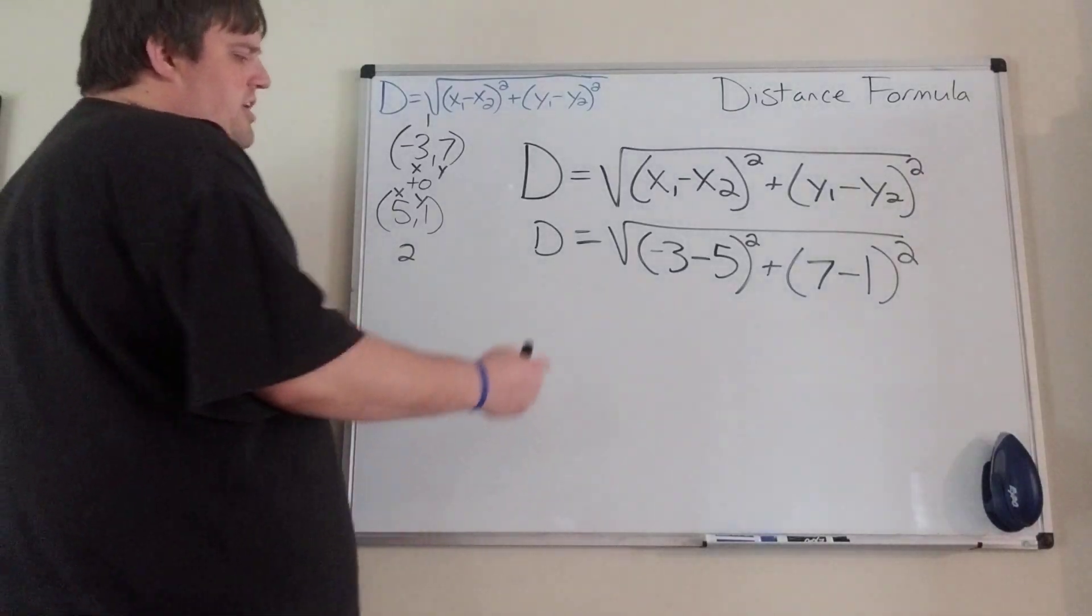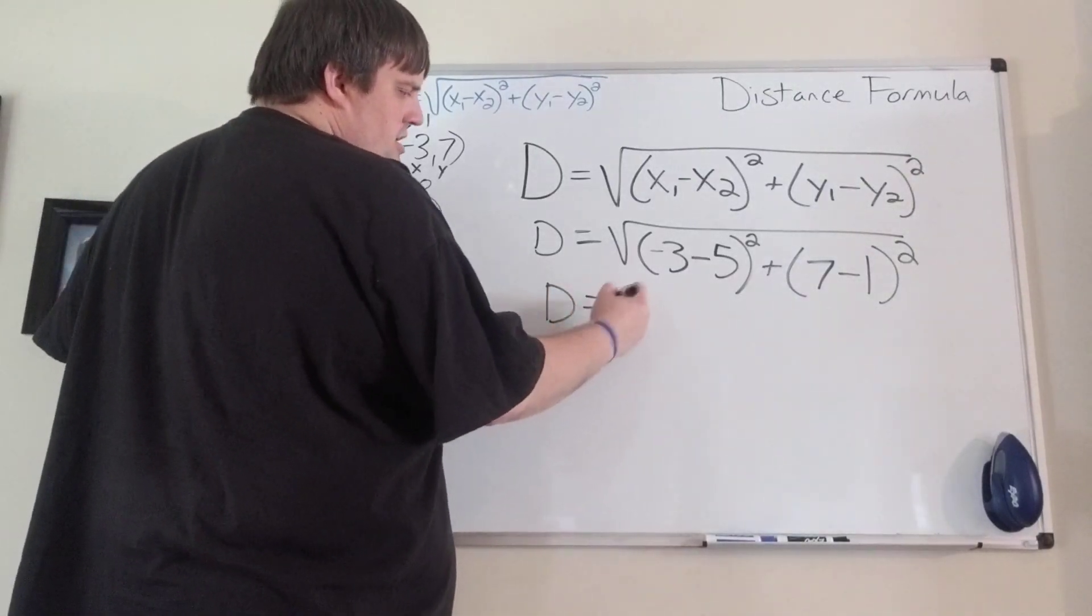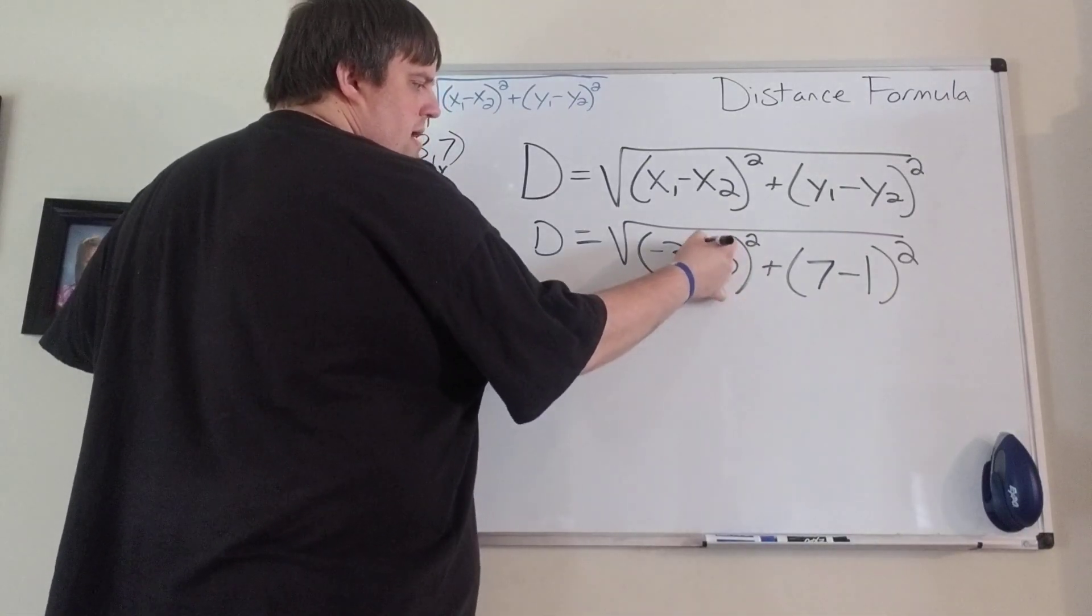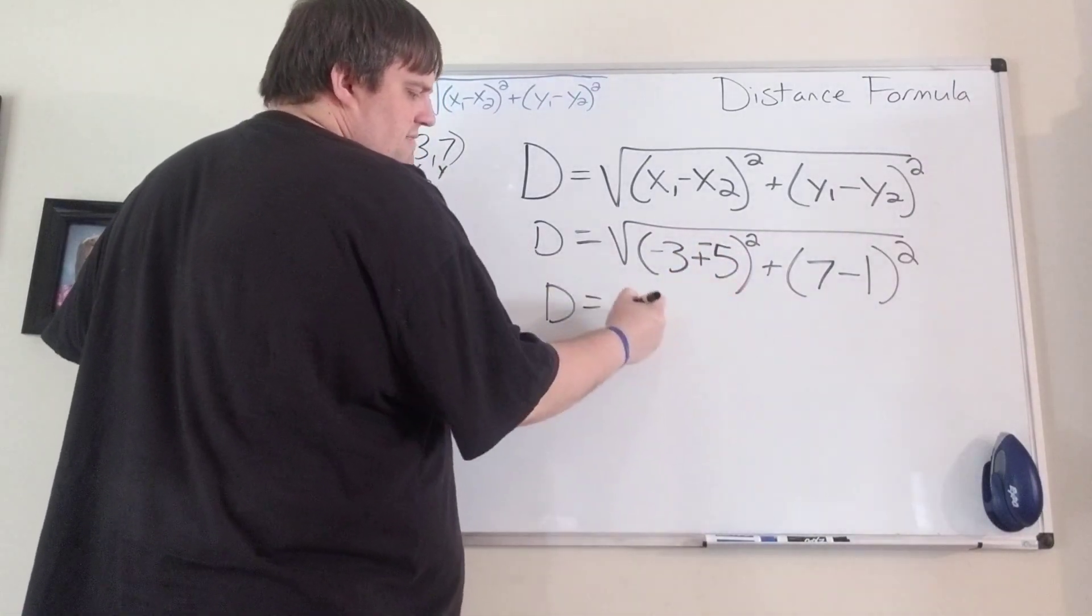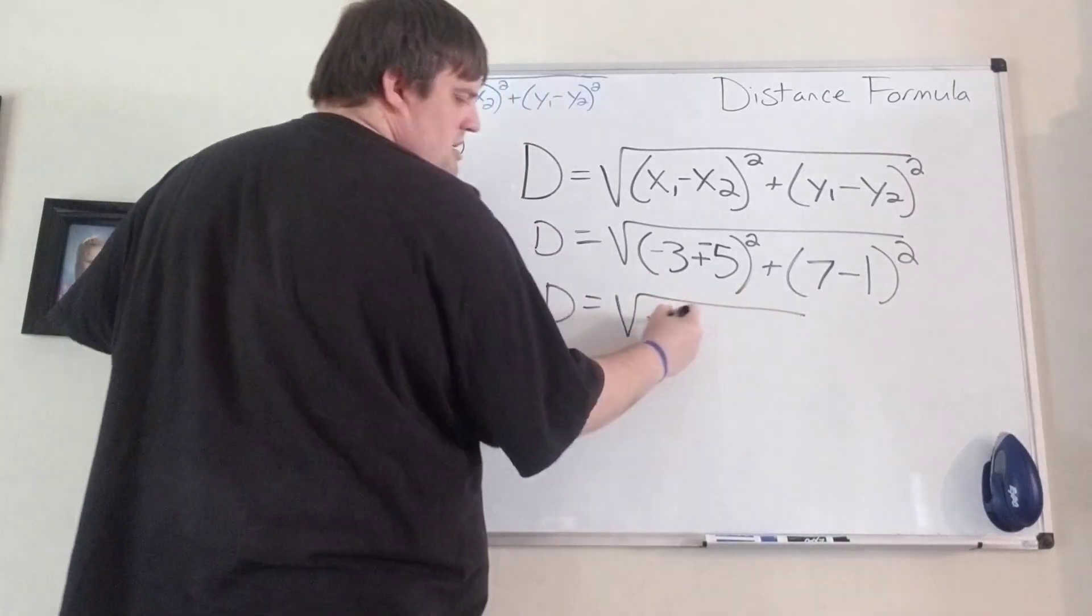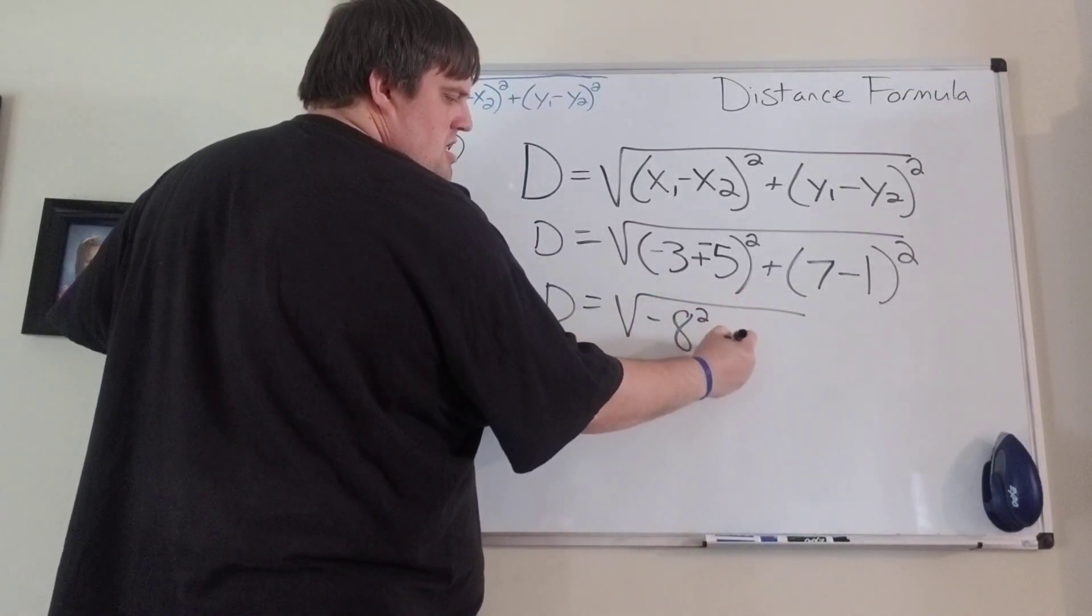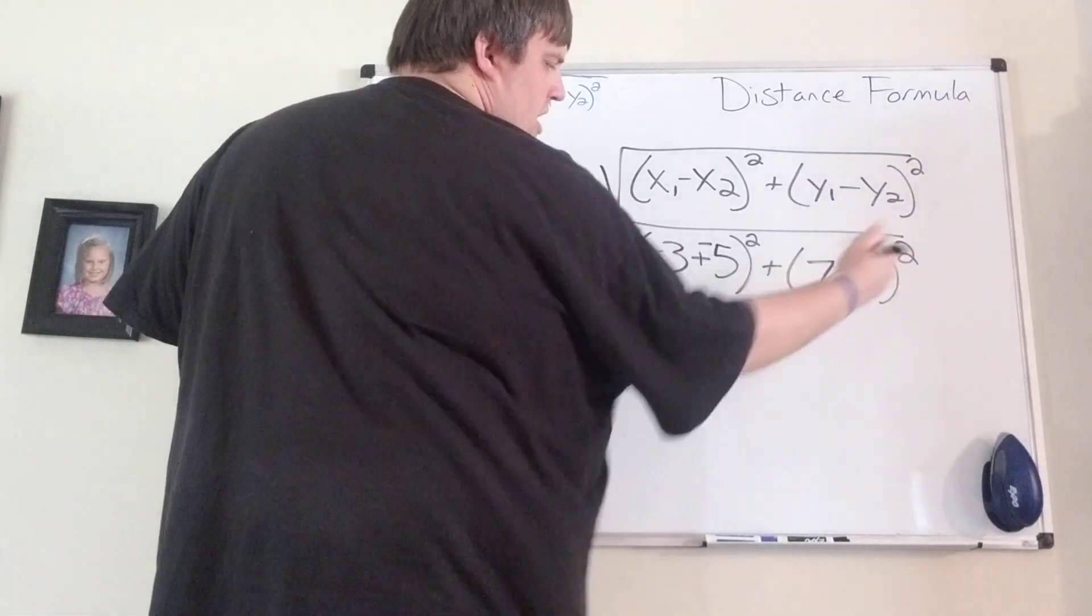x2, here's 2, here's the x, that's 5. Same thing with y1, so we're looking at the first point, the y value is 7. And we're looking at the second point, the y value is 1. So just like most formulas, the hardest part is setting it up. We just plug in those numbers. Now from here, we're just going to do a little bit of subtraction. Negative 3 minus 5, negative 3 plus negative 5 is negative 8. 7 minus 1 is 6.